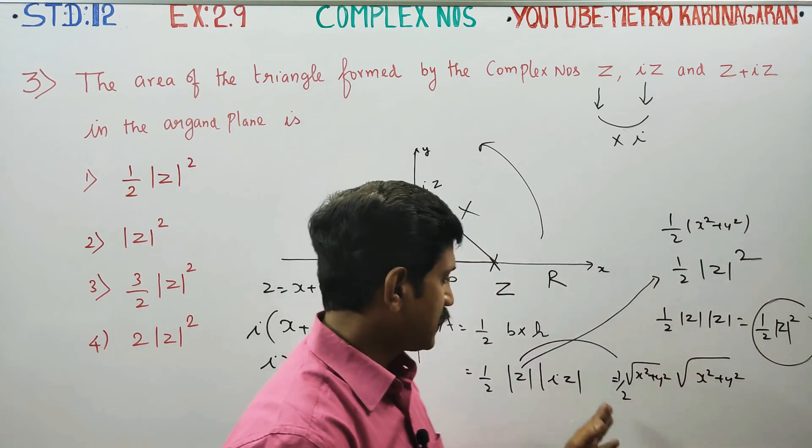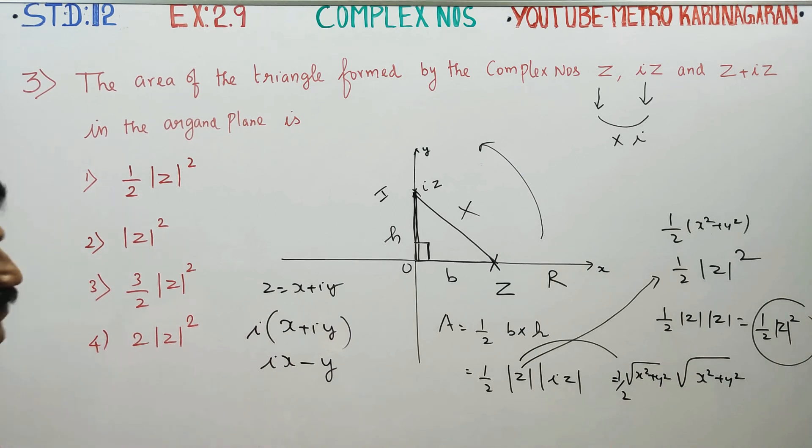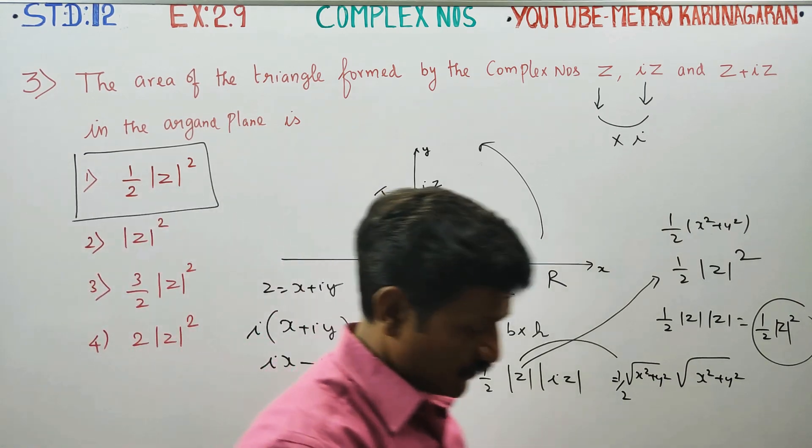This is the square root of x square plus y square model. Your exact answer will be half modulus of Z square, then option one will be the exact answer for this problem.